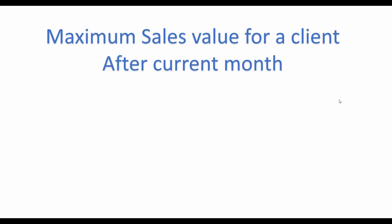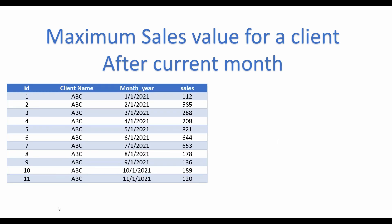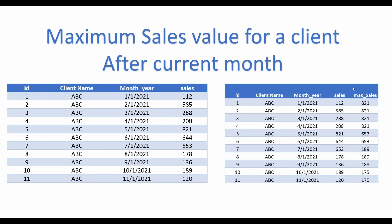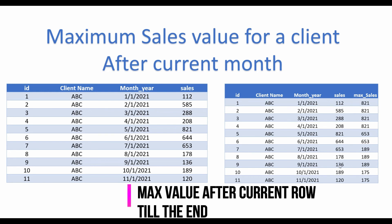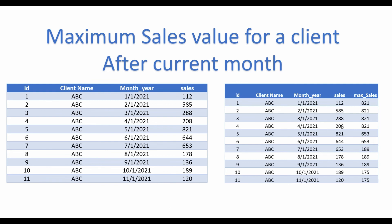For the final one, you have a table listing the revenue from clients on a monthly basis. You want to add another column which will list the maximum revenue earned from the client after the current month. For example, for January 2020, we can see that the maximum revenue was earned in May 2021. So while for May, which had a revenue of A21, we should see the revenue as 653, which is the highest revenue earned from the client after May 2021.